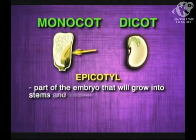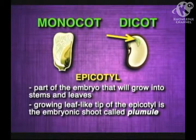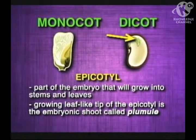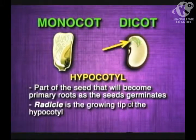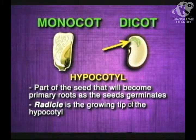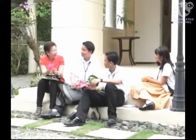The epicotyl is the part of the embryo that will grow into stems and leaves. The growing leaf-like tip of the epicotyl is the embryonic shoot called the plumule. The hypocotyl is the part of the seed embryo that will become primary roots as the seed germinates. The radicle is the growing tip of the hypocotyl. Many of our commercially important food crops like rice, corn, and wheat are monocot plants because of the food stored in their endosperm.